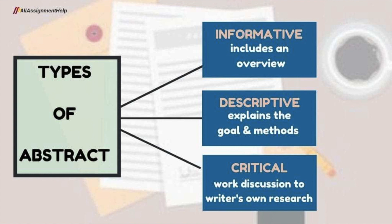The descriptive abstract mainly explains the goal and methods of our study. In the informative abstract, they do more than describing the goal and methods — they include all three components from the descriptive abstract and add two more: the results and the conclusions of the study. For word count, the descriptive abstract is 150 words or less, while the informative abstract should not go over 300 words.